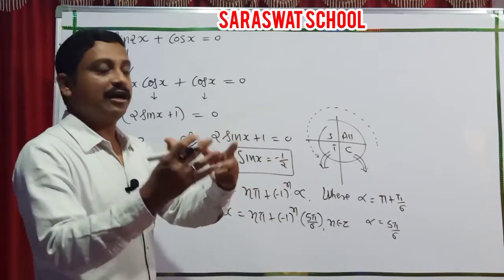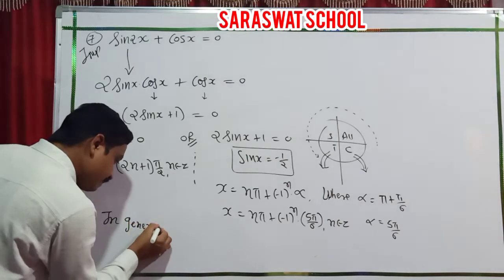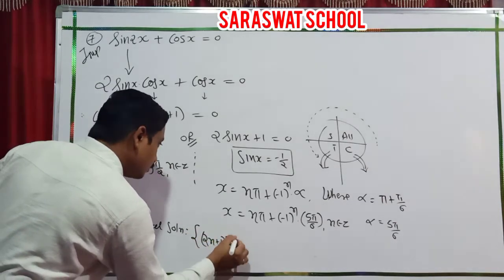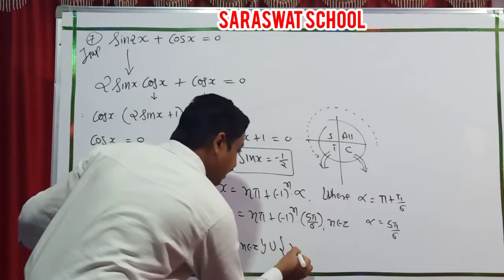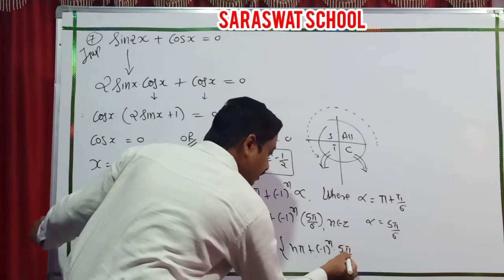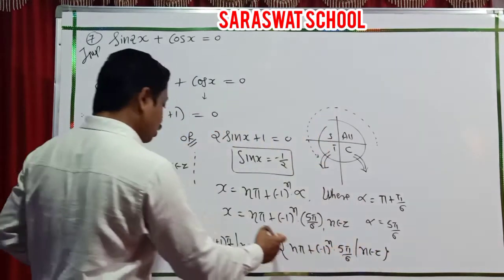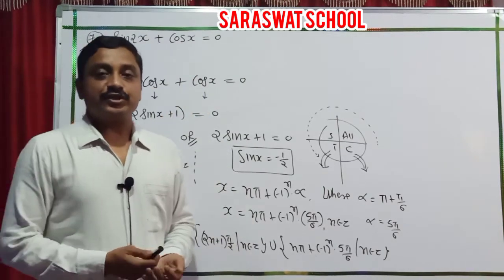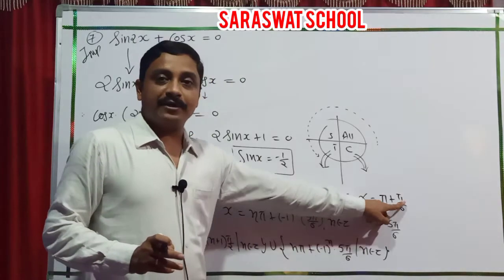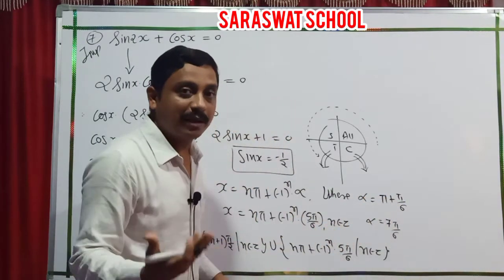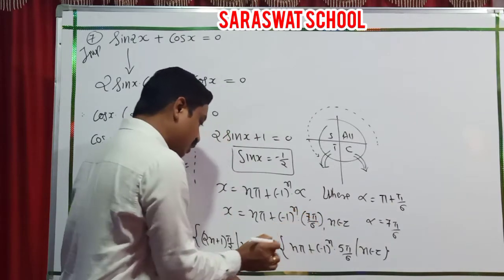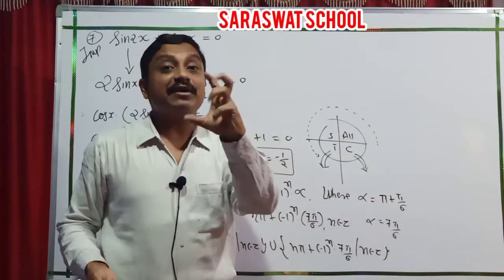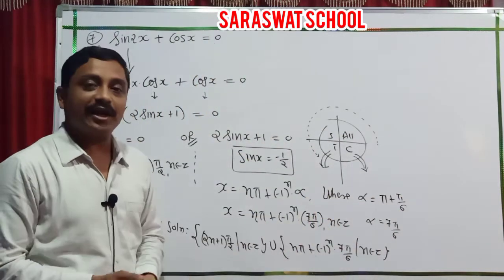Both answers written as final general solution: x equals (2n+1) pi by 2, n belongs to Z, union x equals n pi plus minus 1 raised to n times 5 pi by 6, n belongs to Z. Correction: pi plus pi by 6 is 7 pi by 6, not 5 pi by 6. Please correct your answer to 7 pi by 6.